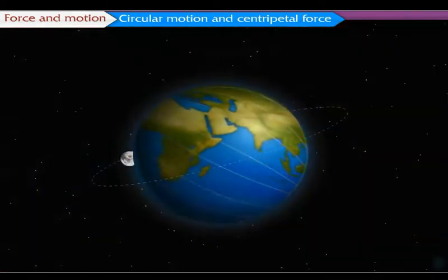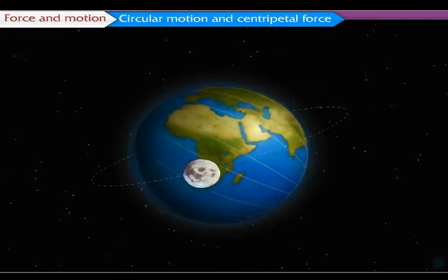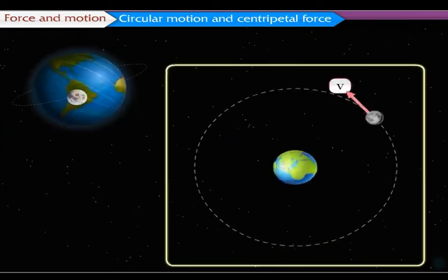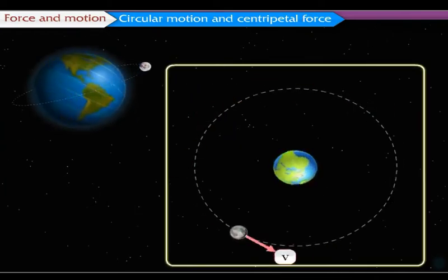We know that the natural satellite of the earth, the moon, goes round it in a definite orbit. During this motion, the direction of the motion of the moon constantly changes, and so its velocity constantly changes.